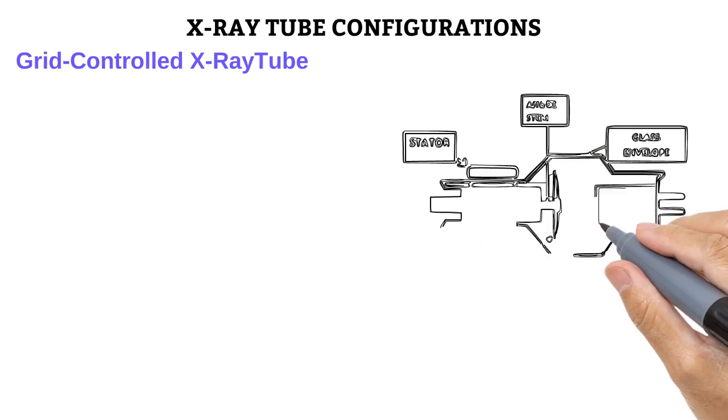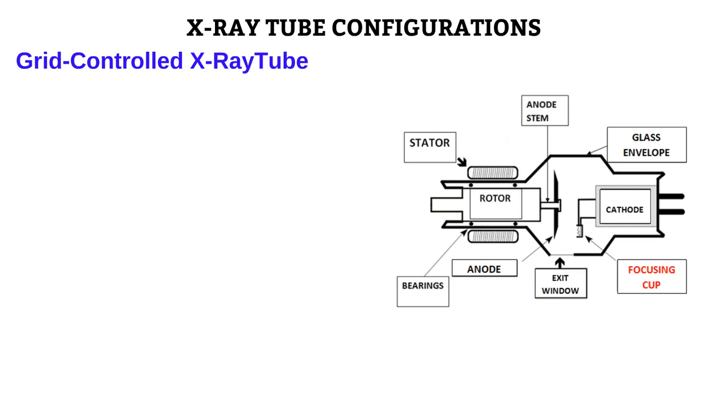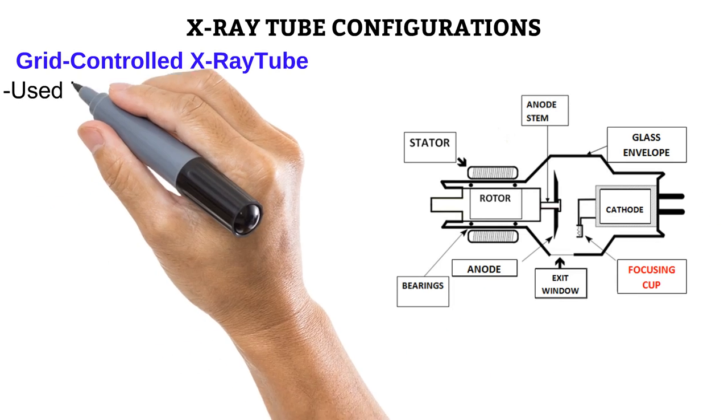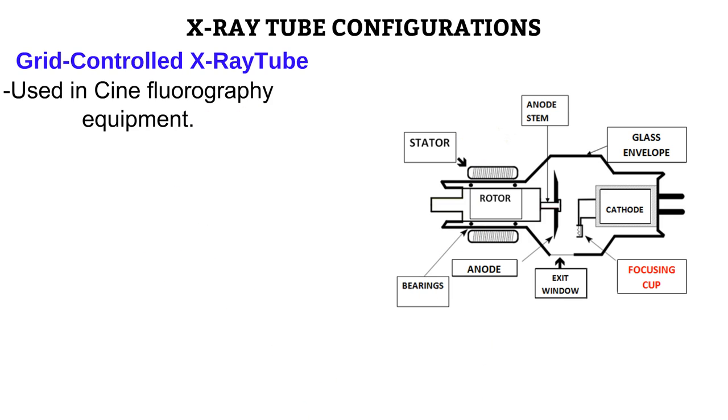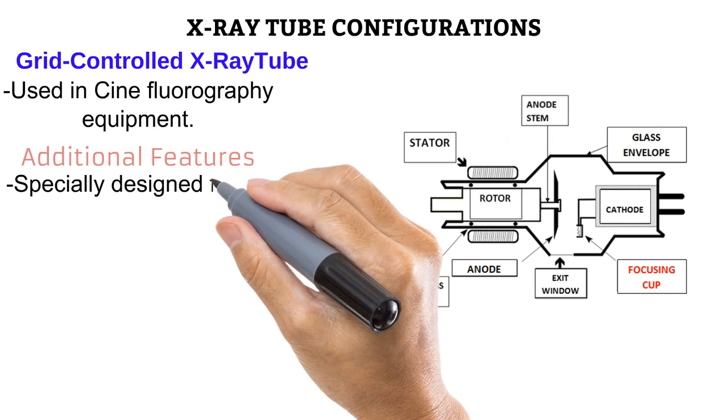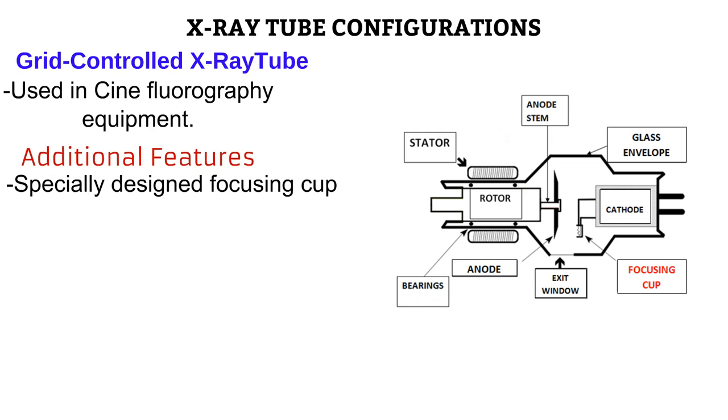The last tube configuration that we'd be looking at is the grid-controlled X-ray tube. This tube is useful in equipment that need to be switched on and off repeatedly and rapidly. An example of which is cine fluorography equipment. Take note that the name has nothing to do with scattered radiation grids. Remember that the normal X-ray tube has two electrodes, the cathode and the anode. In this tube, the focusing cup is specially designed to act as a third electrode. This third electrode would control the flow of electrons from the cathode to the anode. It does this by generating a negative force field. And because same sides repel, this force field repels the negative electrons moving from the cathode filament to the anode.